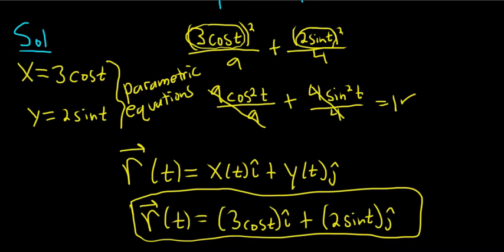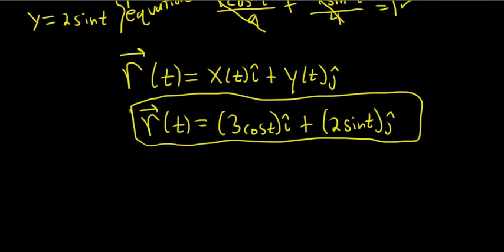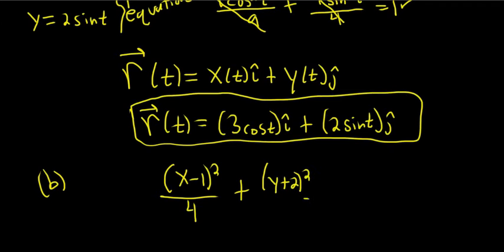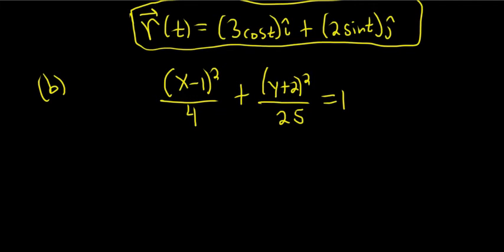Let's do one more, and let's make it way harder. So another ellipse again. How about x minus 1 squared over 4 plus y plus 2 squared over 25 equals 1. So there's a formula you can use for this, but again, let's try to avoid that and do it using our minds.